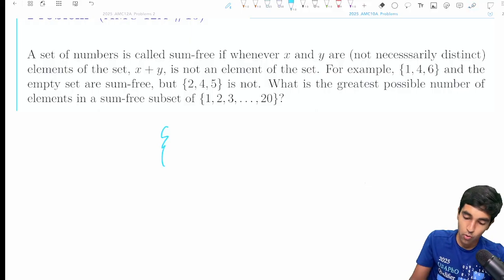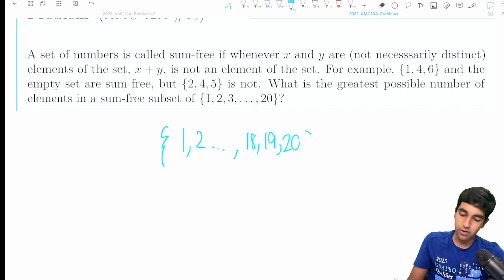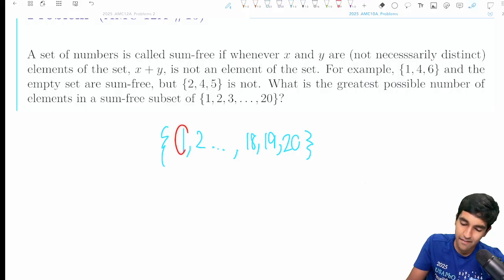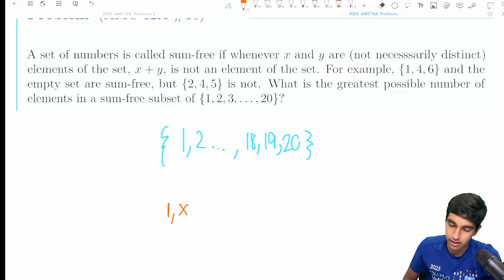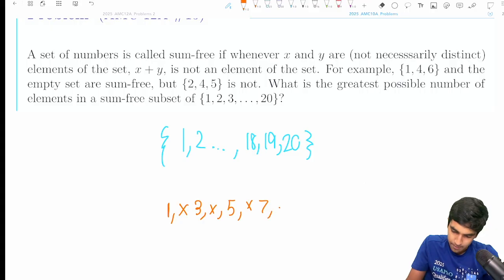The set is 1, 2, ... 20. Try to imagine what would be optimal. Let's say we have 1 - then we can't have 2. Maybe we can have 3, then we can't have 4 because 1 plus 3 is 4. We can have 5 but can't have 6. We can have 7, then 9, 11, 13, 17, 19.